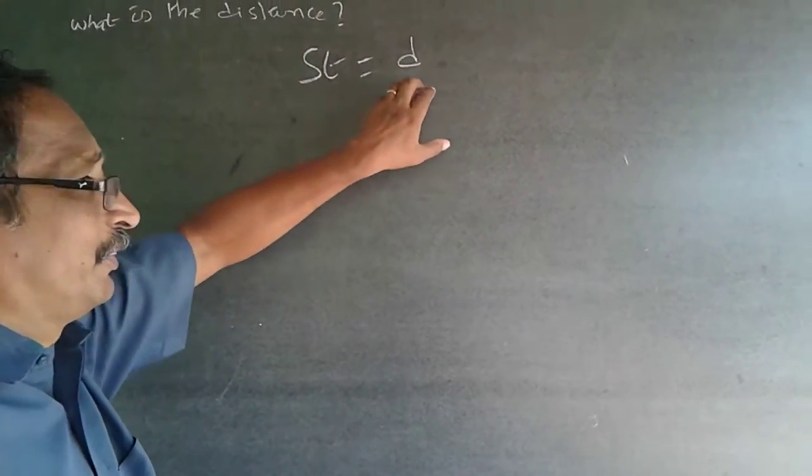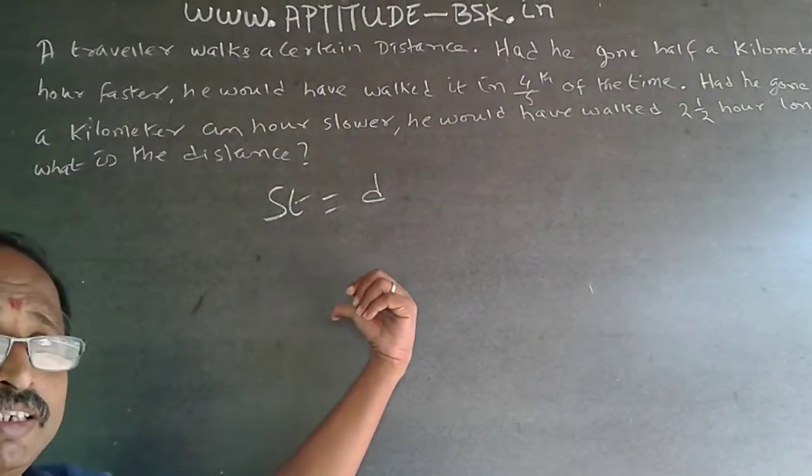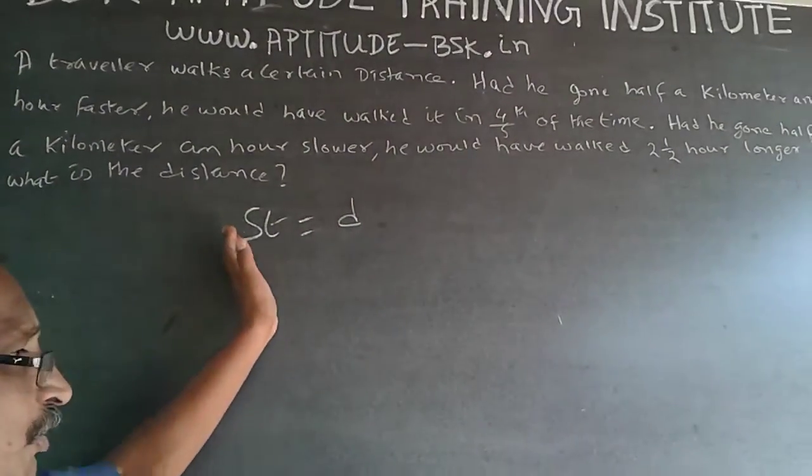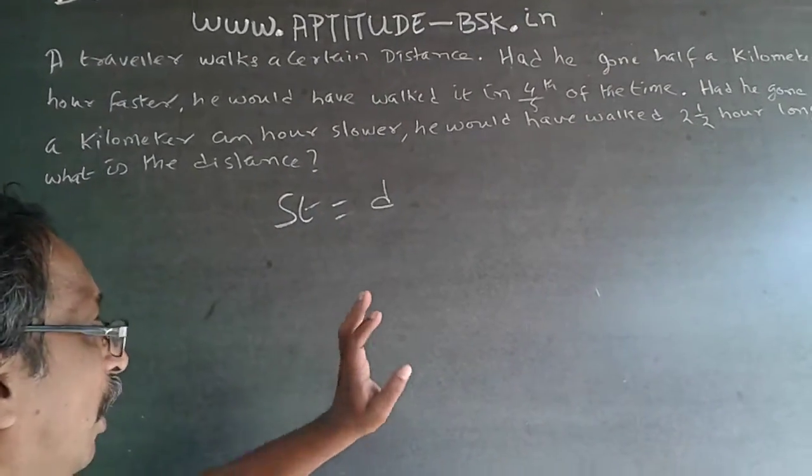And one more thing I'd like to tell you is, when the distance is constant, the speed and time are inversely proportional. If the speed goes up, time comes down. If the time goes up, speed comes down.